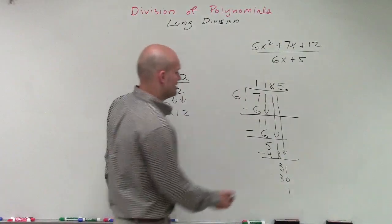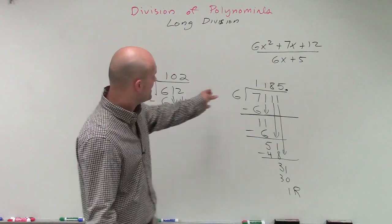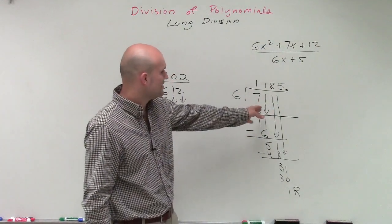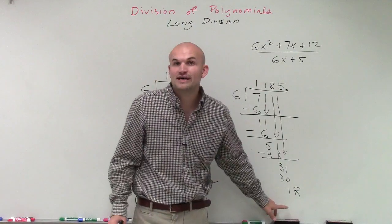Now a lot of times we'd say, oh well, that's your remainder, right? So we'd say 7,111 divided by 6 is 1,185 with a remainder of 1.